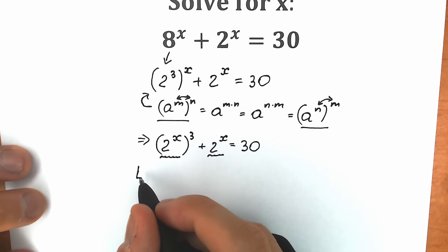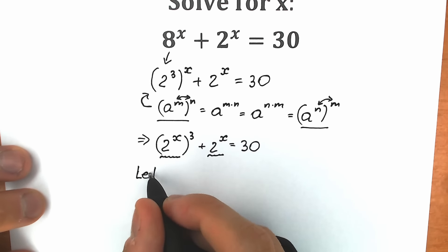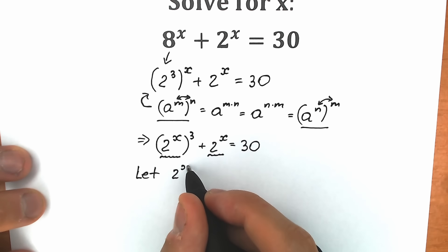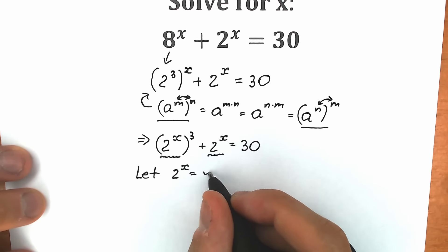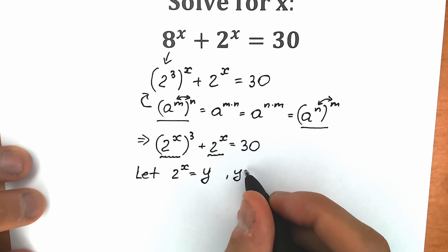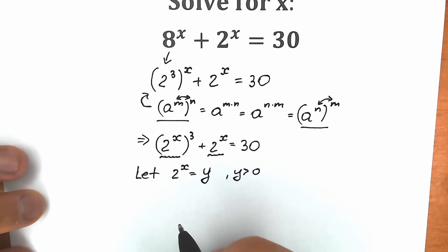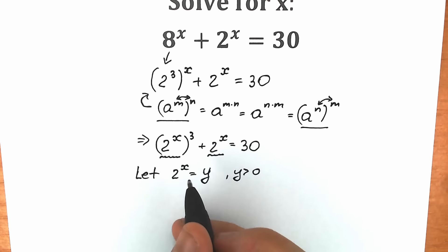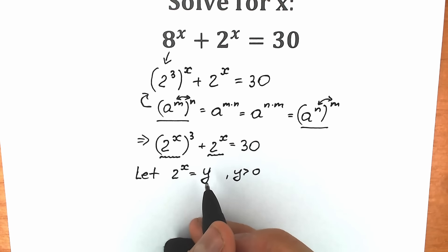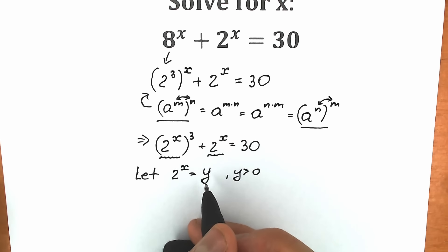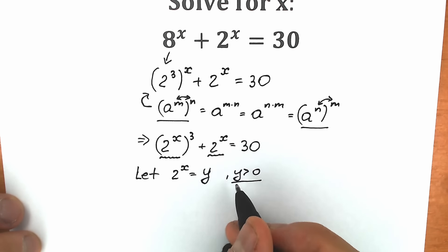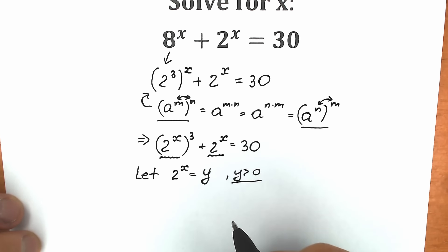Our substitution looks like this: let 2 to the x equal to y. But y must be positive because we are talking about an exponential function — this function on the left side is always positive. No matter what the power x is, we always have a positive value of y. So this is a really important moment: y is positive.